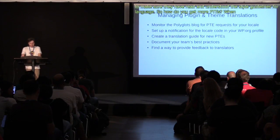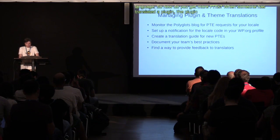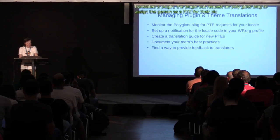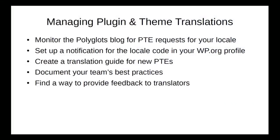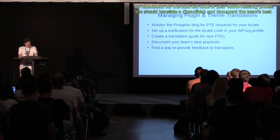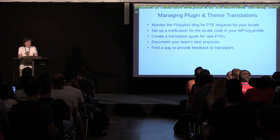So how do you get more PTEs? When someone has translated a plugin, the plugin author posts a request on the Polyglots blog to assign that person as a PTE for their plugin. You should monitor those requests, check the strings, and if everything is okay, add that translator as a PTE. If there's an issue, let them know what it is and how to fix it. You don't have to monitor the Polyglots blog manually — you can set up a notification for the locale code in your WordPress.org profile. You should create a translation guide to refer new PTEs to and document your team's best practices to make sure everyone is on the same page. Currently, there's no way in GlotPress to reject a string with feedback, so if you'd like to explain the reason for a rejection, you have to find a way to contact the translator.